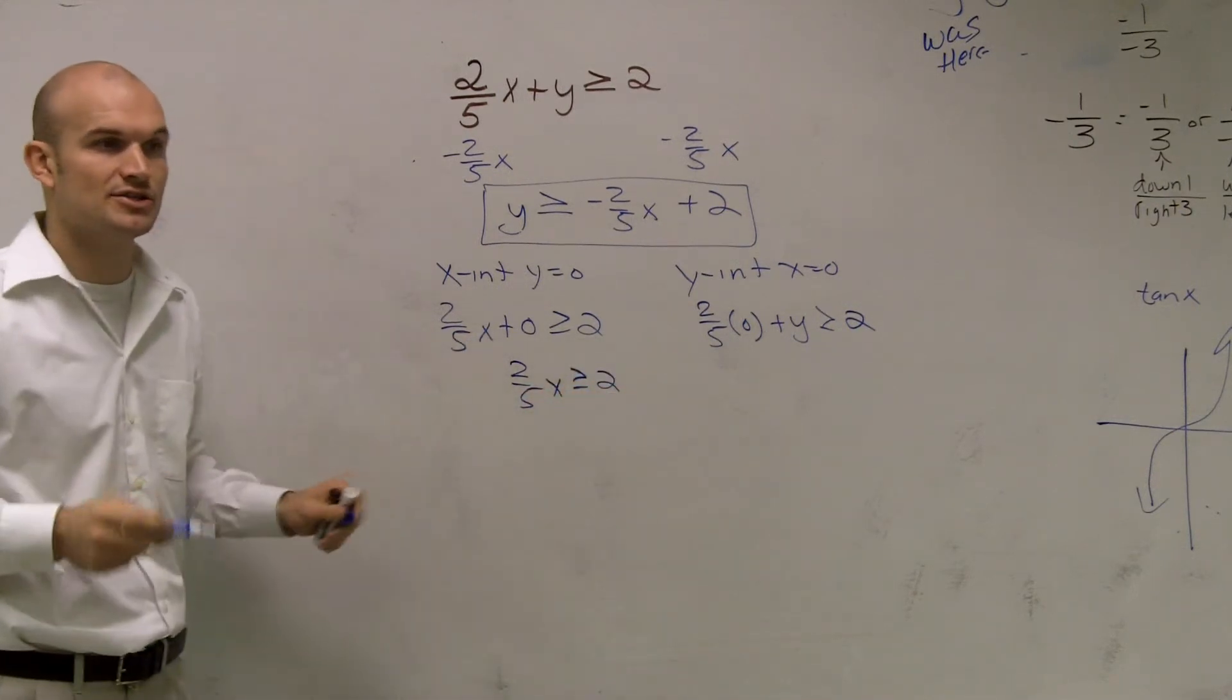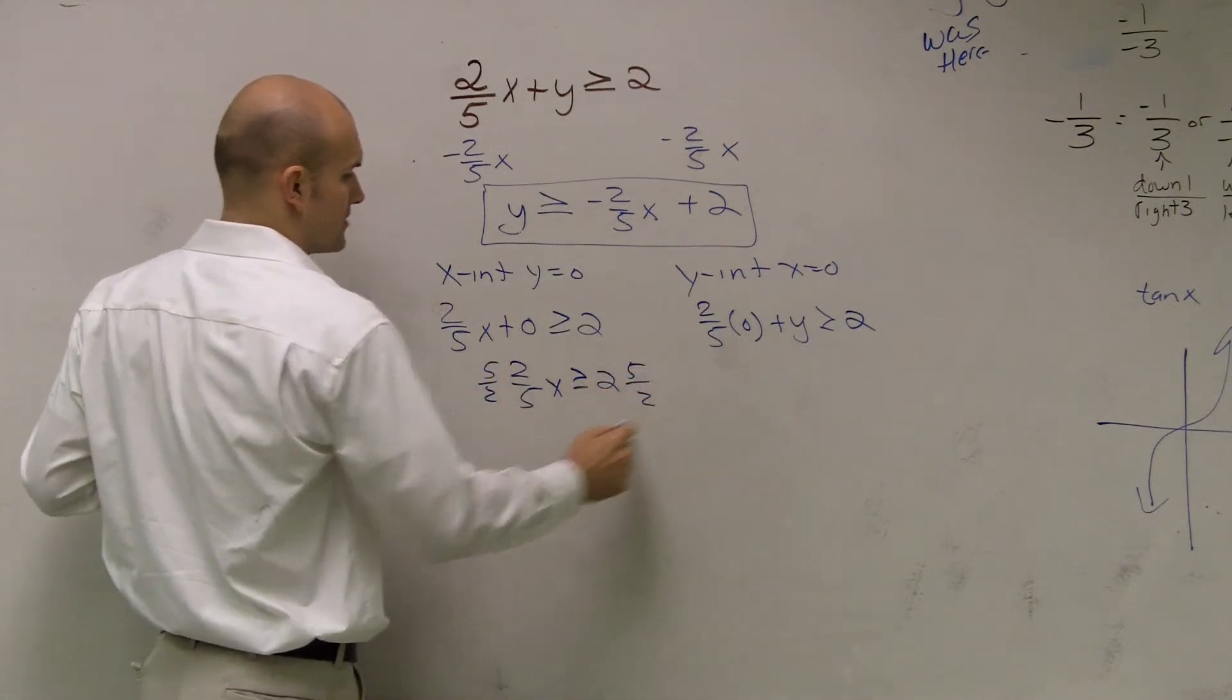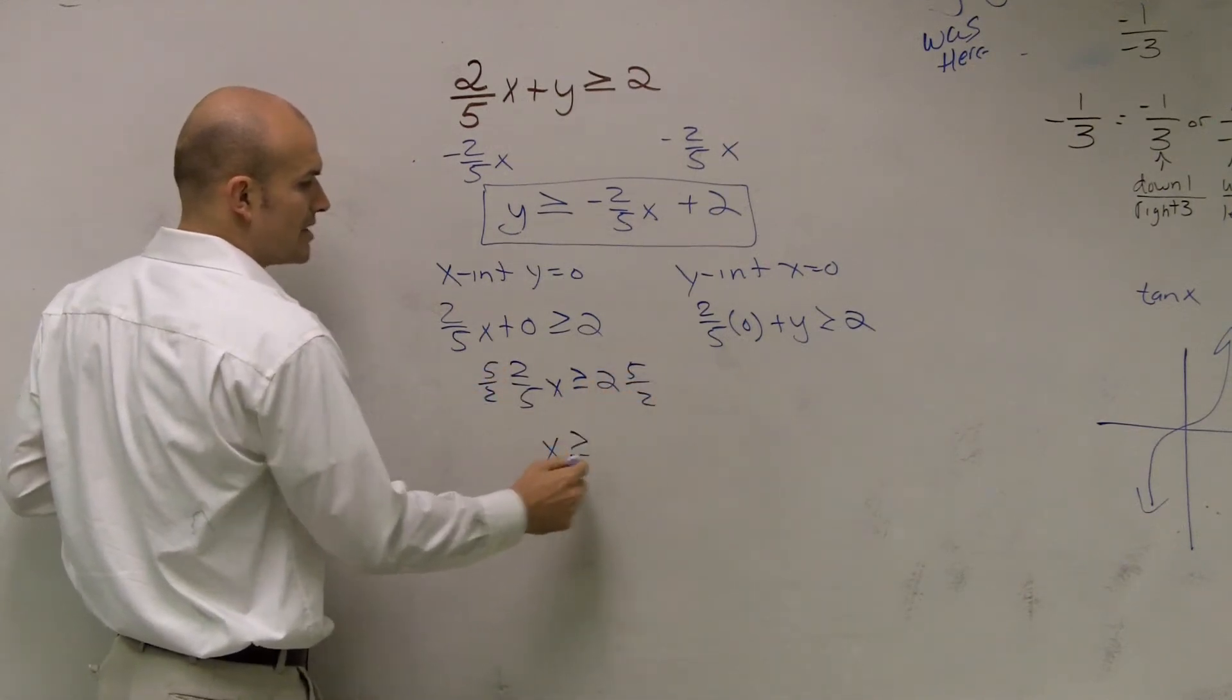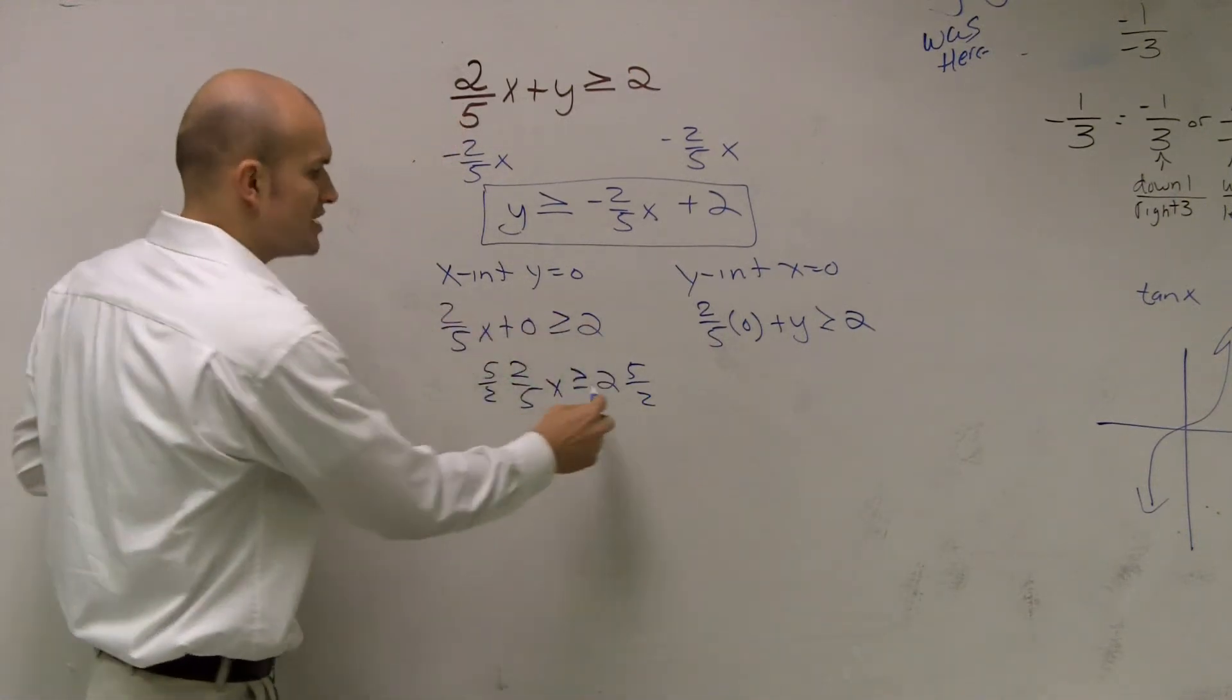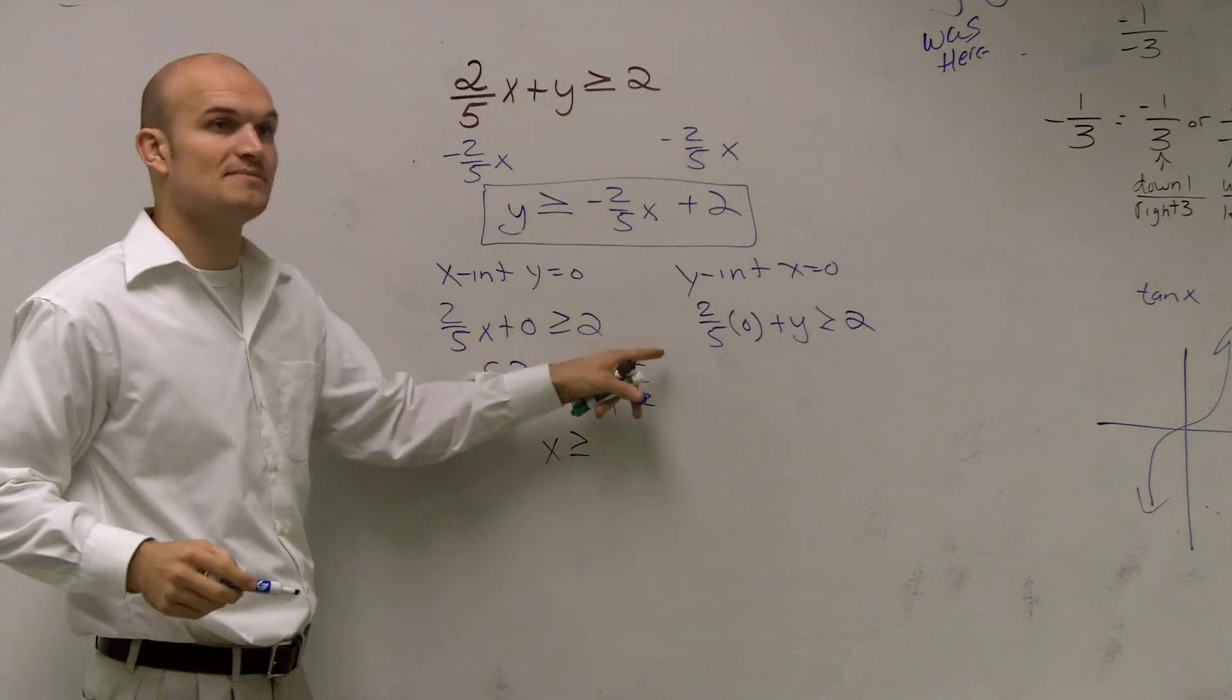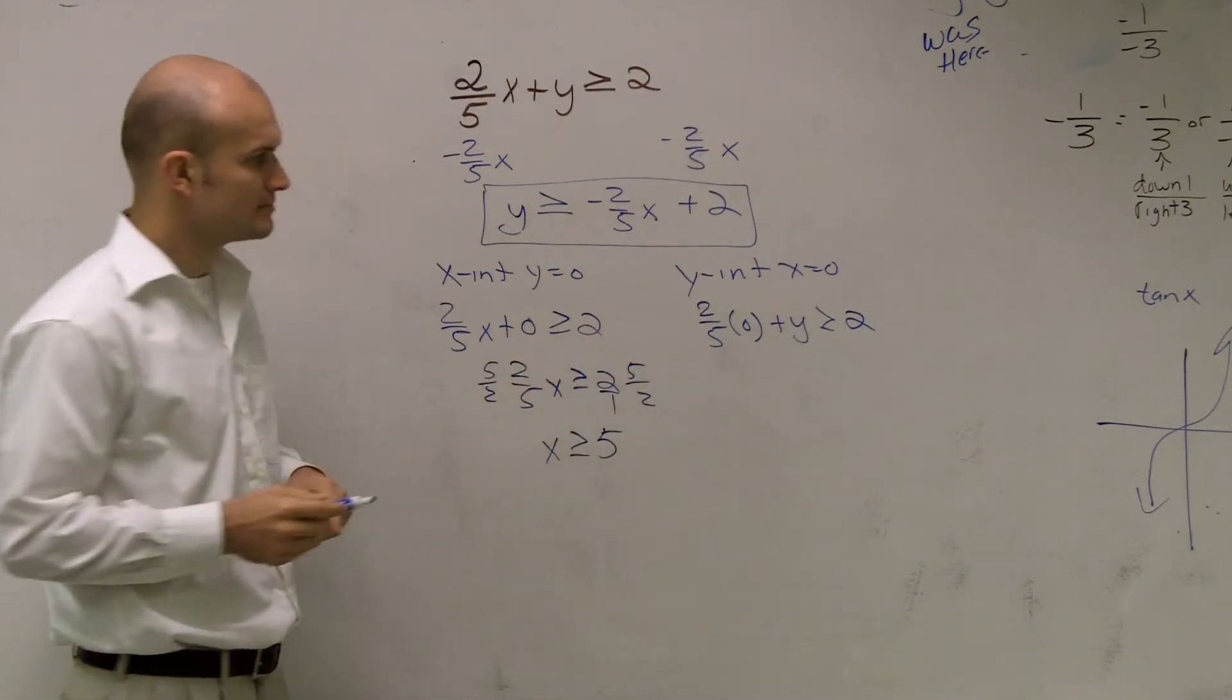Well, now I need to get rid of my 2 fifths. So I'm going to multiply by 5 halves on both sides. And therefore, x is now greater than or equal to what's 2 times 5 halves? Well, I can change that to a fraction. 2 times 5 is 10 divided by 2 is 5.